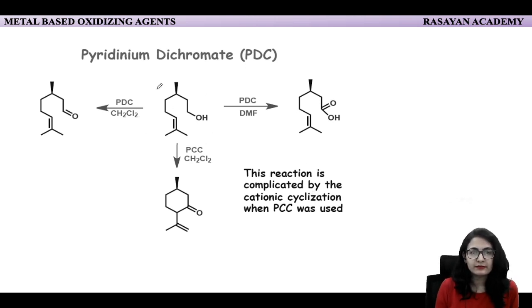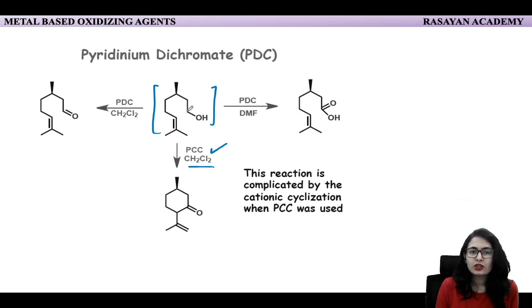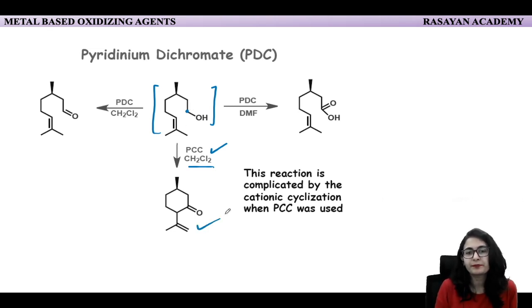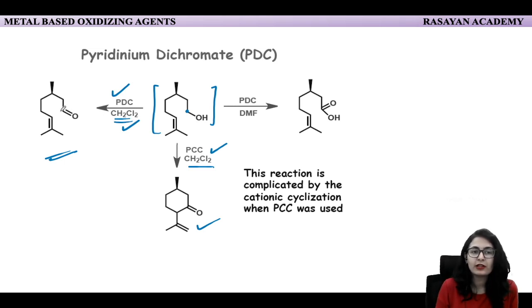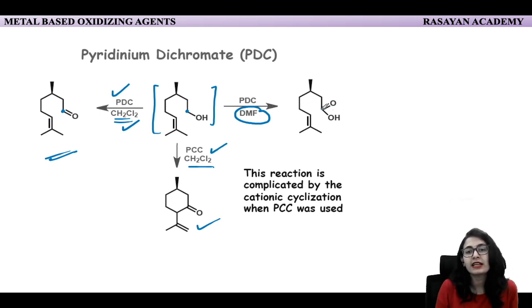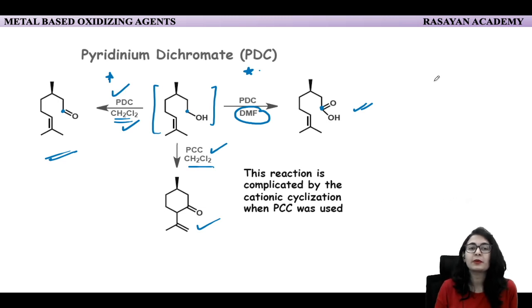A key discrimination of PDC: for a molecule where the same PCC in DCM would give ene-reaction cyclization product, if instead we use PDC in CH₂Cl₂, it is going to simply convert the alcohol to aldehyde without the ene side reaction. This is because PDC in DCM is less acidic and less reactive, so if you want only the aldehyde product, choose PDC in CH₂Cl₂.